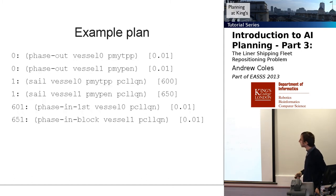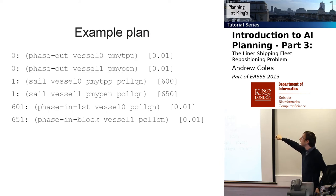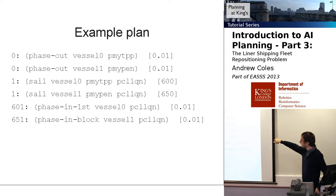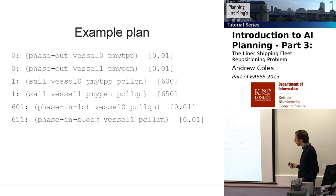Here's what a plan might look like in that domain. We phase out the two vessels from their initial ports, sail them through to a common destination port. The first one phases in, then the next one phases in with a different phase-in action, but ultimately both phase in. That's a good starting point for this problem.